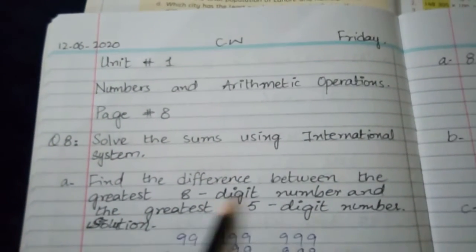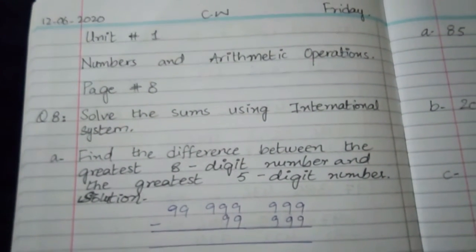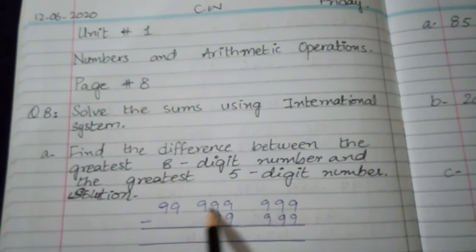Part A: Find the difference between the greatest 8-digit number and the greatest 5-digit number. What is the greatest 8-digit number?